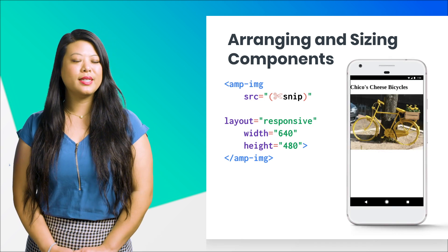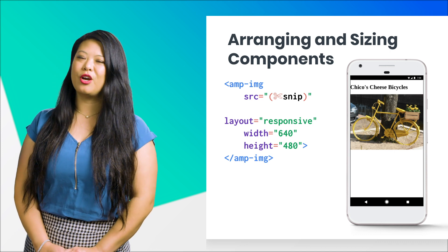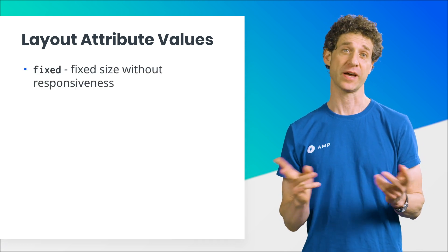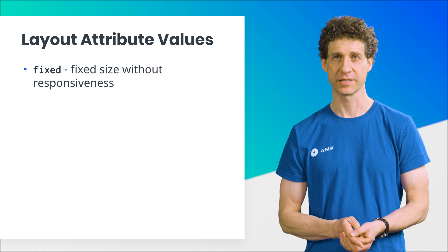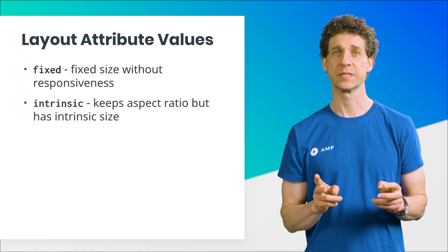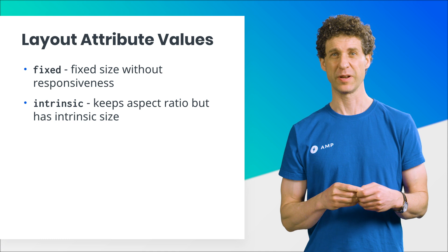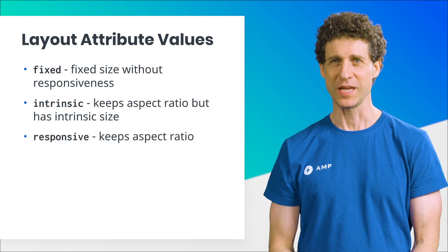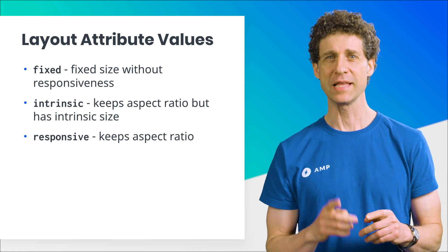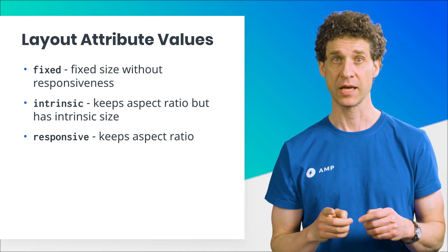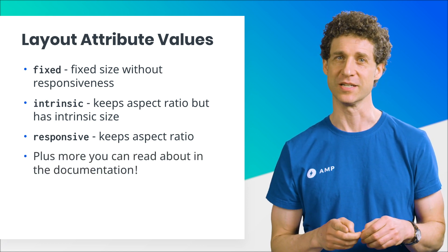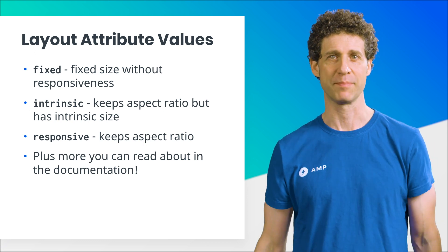Now it has the correct aspect ratio and fills the width of your screen on your mobile device. AMP has a few layout types. For example, fixed means that the component's size is fixed and will never get resized. Intrinsic is similar to responsive — it has the concept of an intrinsic height and width that the component can't exceed. Responsive retains the component's aspect ratio while letting it shrink and grow with its container. AMP offers other layout types to make it easier to build your page — to learn more, check the AMP documentation.